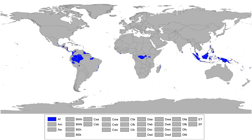A tropical rainforest climate is usually found at latitudes within 10 degrees north and south of the equator, which are dominated by the intertropical convergence zone. The climate is most commonly found in South America, Central Africa, Southeast Asia, and Oceania.